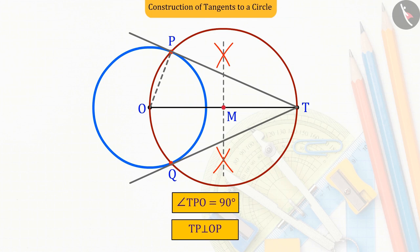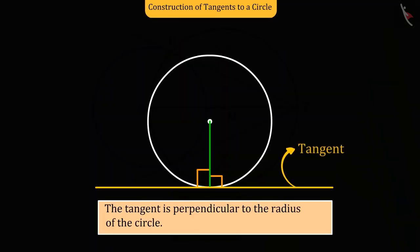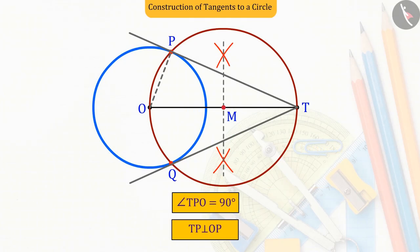And as we learned in the previous lesson, the tangent line is perpendicular to the radius of the circle. So we can say that TP will be the tangent line of the circle.